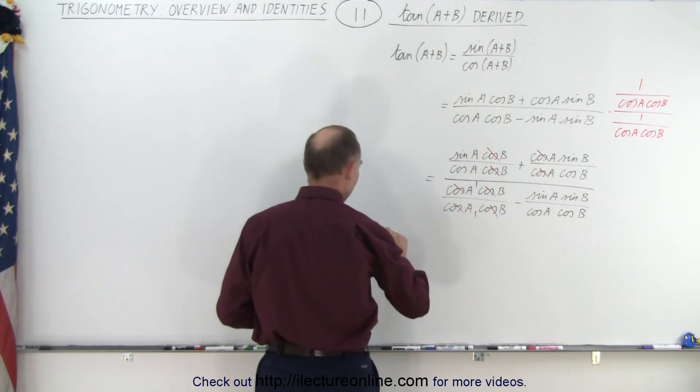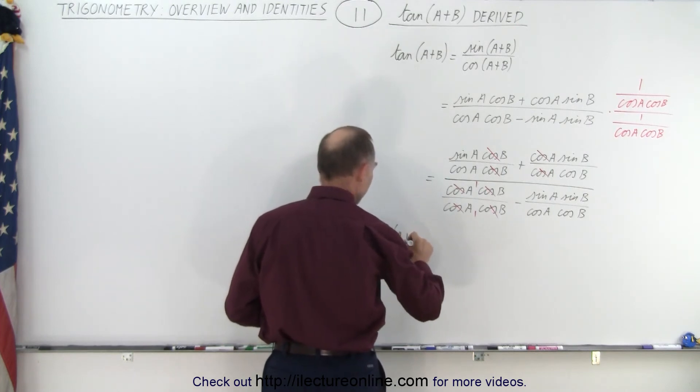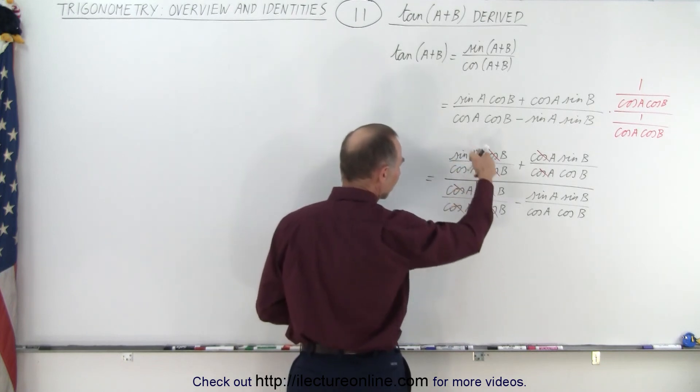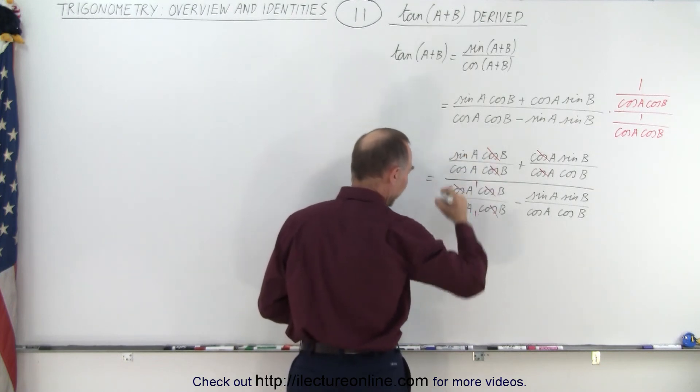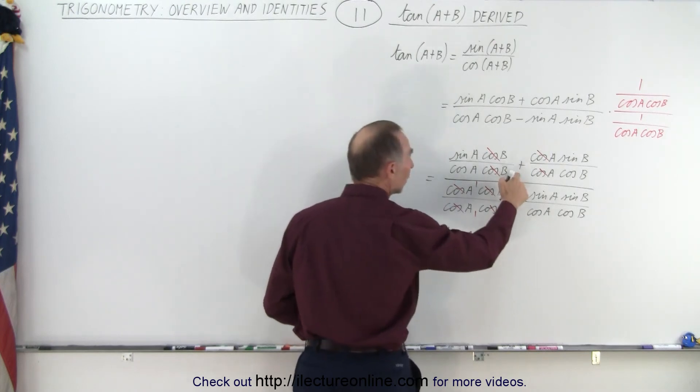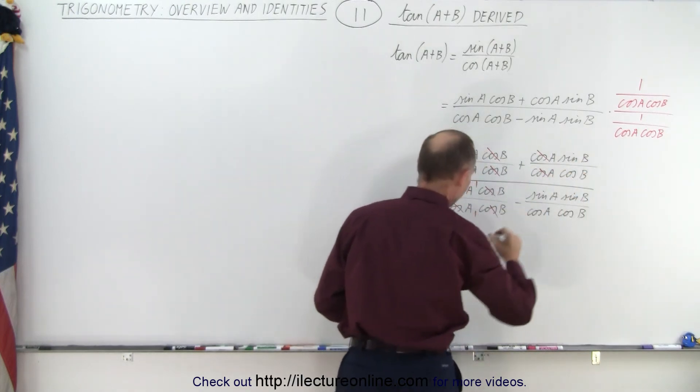So we can write that the tangent of A plus B can be written as the sine of A over the cosine of A, which is equal to the tangent of A, plus this gives us the tangent of B